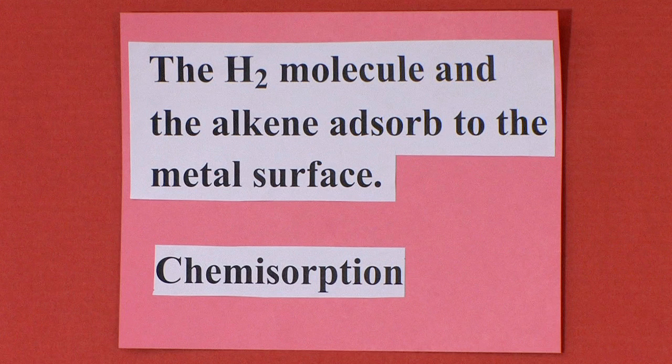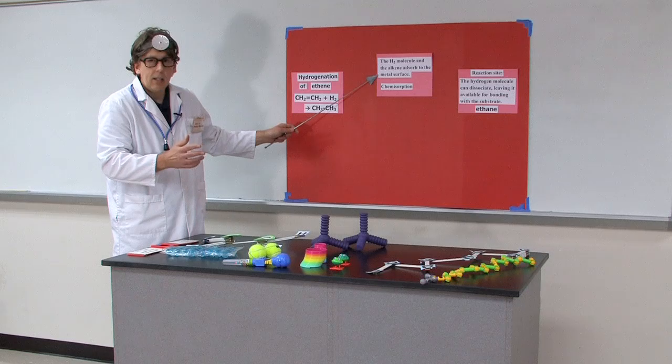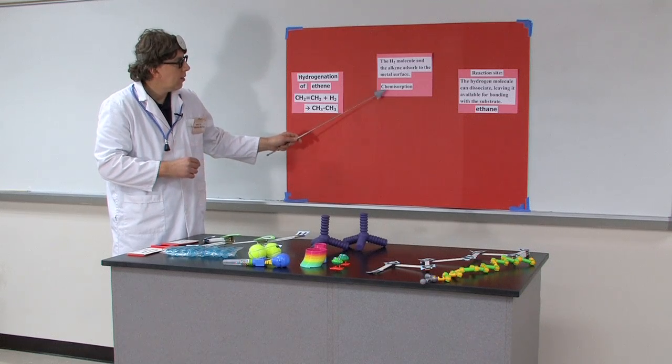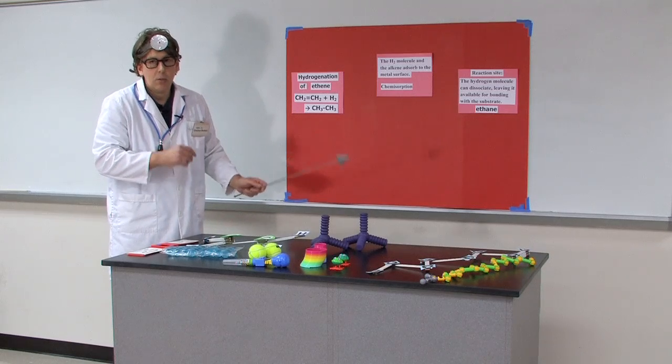So the H2 molecule and the alkene adsorb, stick to the metal surface. This is called chemosorption.